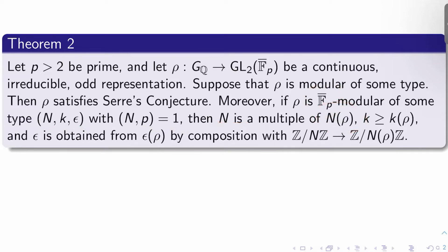...N is a multiple of N(ρ), the N from Serre's conjecture, k is at least k(ρ), the k from Serre's conjecture, and ε is obtained from ε(ρ), the epsilon from Serre's conjecture, via the canonical map from Z mod NZ to Z mod N(ρ)Z.